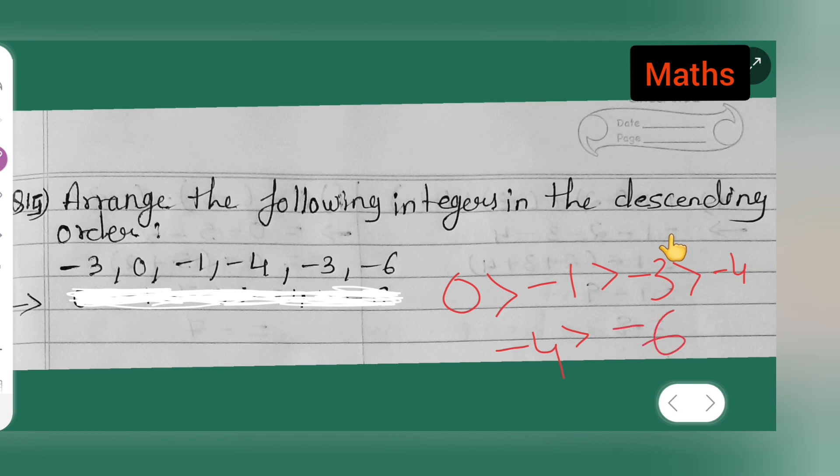You can take down the answer of today's question. 0 is greater than -1, -1 is greater than -3.